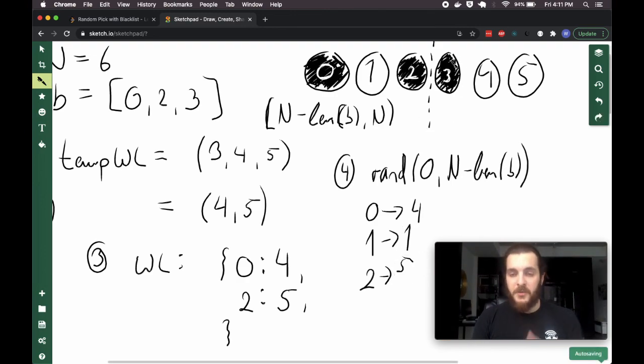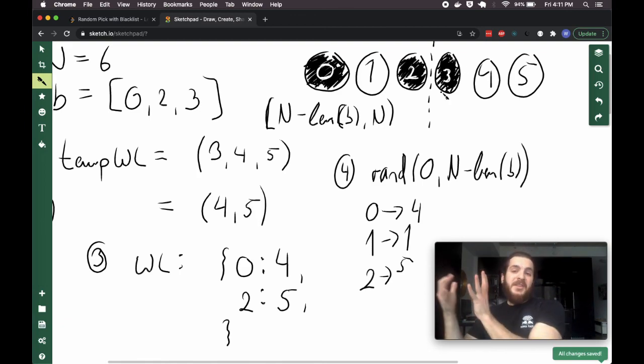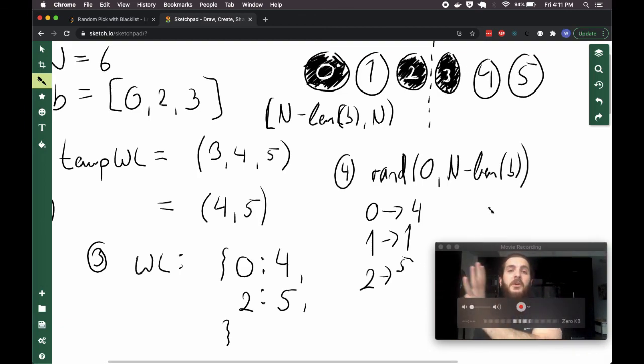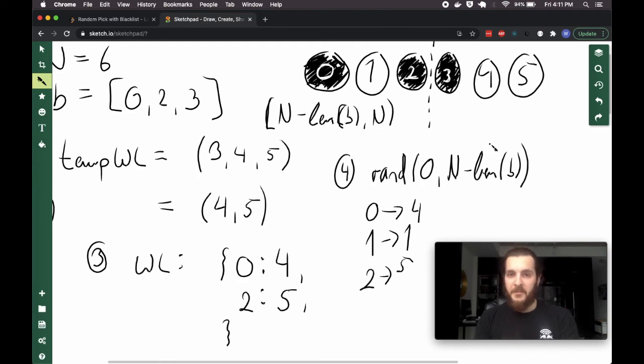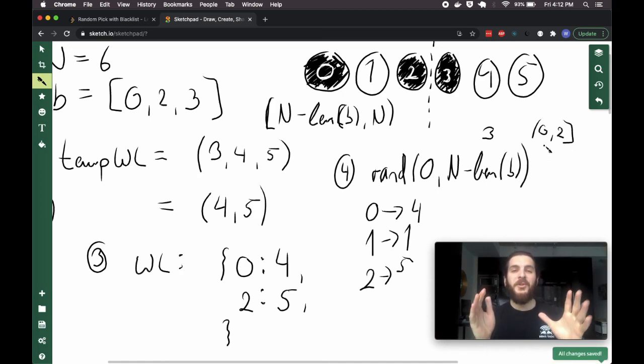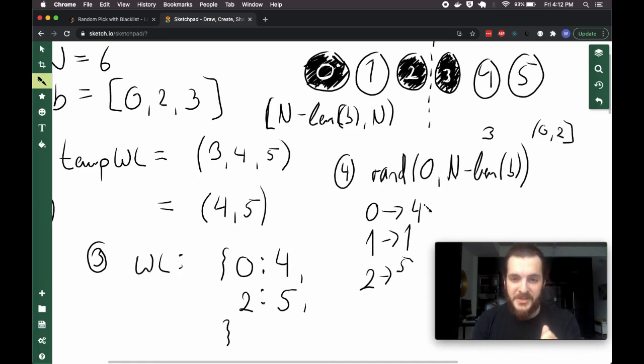You may ask yourself, what about this three up here? Since three is in that second half of the bucket, I'm not even going to be generating numbers that are that big to roll. We're only going from zero to N minus length of B, which is in this case six minus three, which is three, non-inclusive, meaning zero to two de facto, two being inclusive. I'm only going to roll numbers from zero to two. Between zero to two, I'm going to return every possible number that exists on the actual whitelist, so that whitelist being one, four, and five.